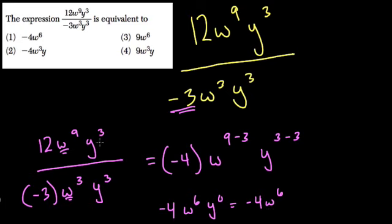And you might recognize it here. We just subtract these two exponents. But really, we have y to the 3rd over itself. Anything over itself cancels out. Because anything divided by itself is 1.